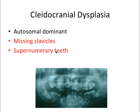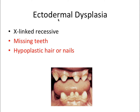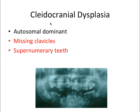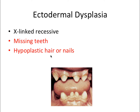In complete contrast, ectodermal dysplasia involves missing teeth. Instead of missing clavicles, you have hypoplastic hair or nails — super thin hair, super thin and brittle nails, or just balding. For cleidocranial dysplasia, remember C and C: cleidocranial and clavicle. For ectodermal dysplasia, remember the ectodermal tissues like hair and nails are involved. Both of these are super, super important — know them like the back of your hand.